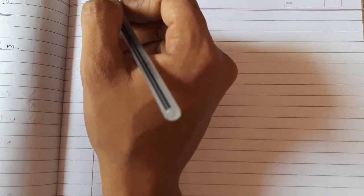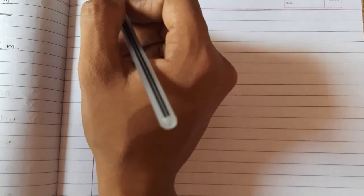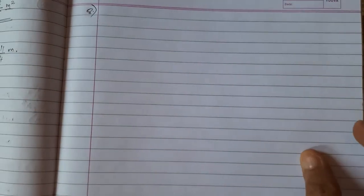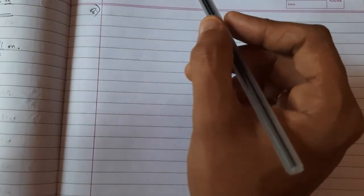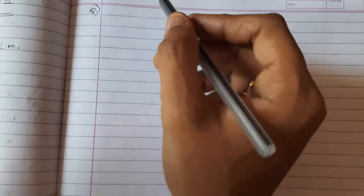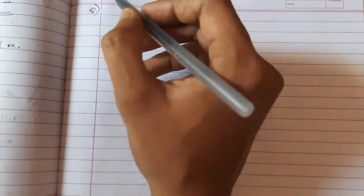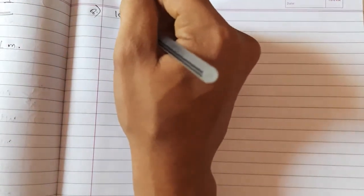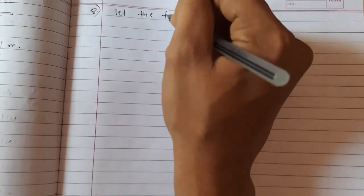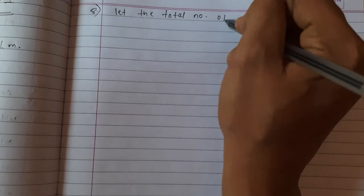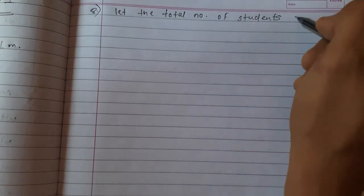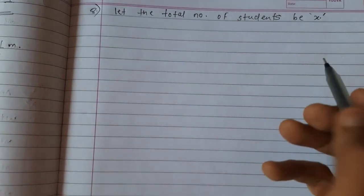Very simple sums these are. But you have to understand the question first. Eighth one we will solve. In a school, 5 upon 8 of the total students are girls. If the number of girls is 120 more than that of the boys, what is the strength of the school? How many boys are there? Let us start solving the question. First what we will do, we will consider total number of students as x. Let the total number of students be x.